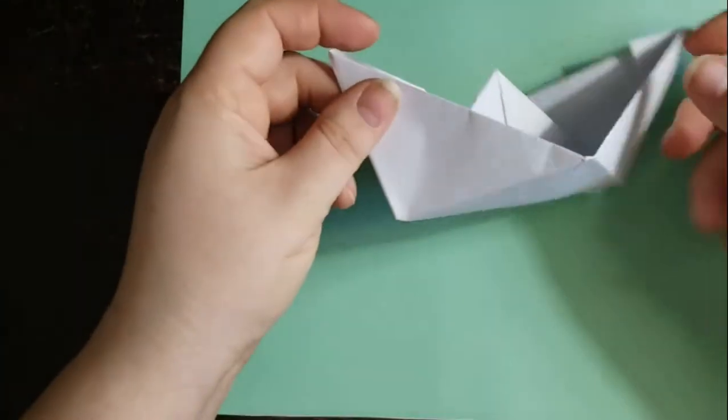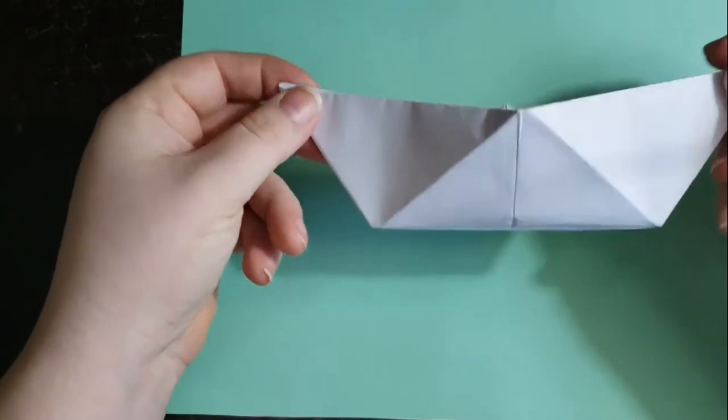Hi, so today we're going to make an origami boat. Instead of using origami paper, I'm using 8.5 by 11 inch paper because this needs to be rectangular. It's a little bit big, but once I start folding you'll be able to see it all.